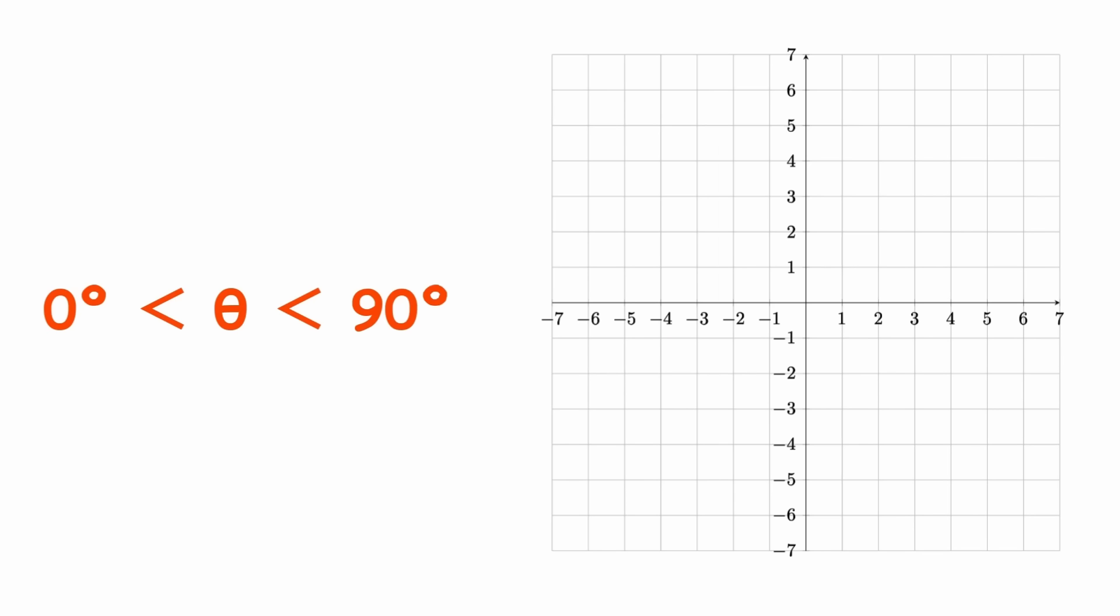If theta is greater than 0 degrees and less than 90 degrees, the slope is positive. If theta is greater than 90 degrees and less than 180 degrees, the slope is negative. If theta equals 0 degrees, the slope is 0, the line is horizontal.